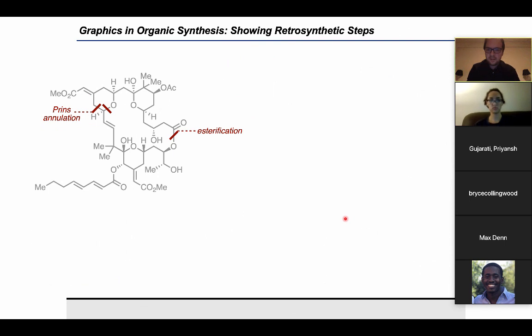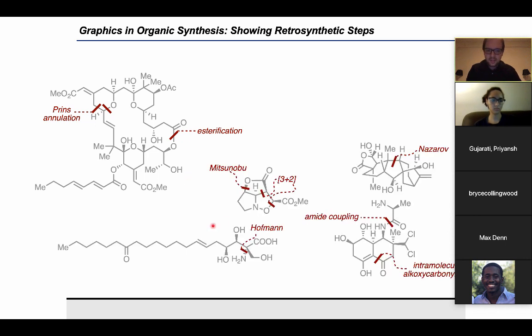Thinking about retrosynthesis a little bit, there are a couple of different ways that people like to use to show that. One way that I like to use is by using the contrast of a bold line and a dotted line. Using a bold line as a disconnection and a dotted line to connect it to the text that's describing that type of disconnection. So for example, in this case on the left, we've got two lines showing the disconnections that would be used in the Prins cyclization. Or in this case on the right, we've got a disconnection for an esterification. Here are some other examples of different times that we've used this sort of style for doing retrosynthesis.